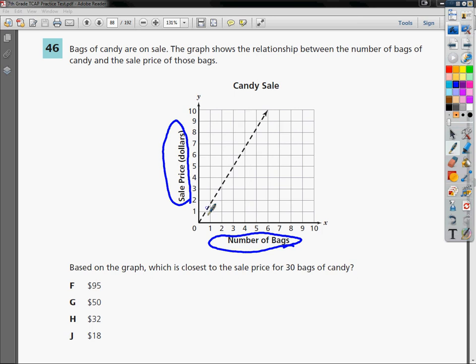Any point on this graph I can find out how much a number of bags cost. Let's say I wanted four bags, I would go here, make a dot, come over. It's somewhere between 6 and 7, let's say $6.50. Now, that's how that graph would be set up.